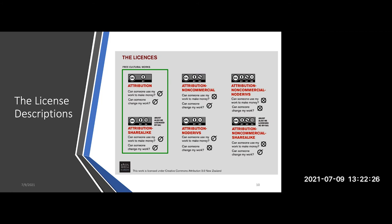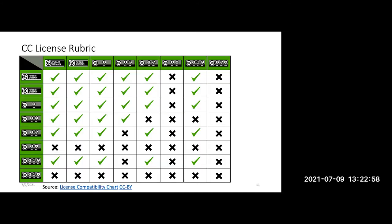Here we get a little sticky sometimes, because the purpose of Creative Commons is to allow you the greatest freedom in using those works. But open licenses — those in the green box — allow the greatest flexibility. If you try to mix several different resources with these licenses, you can run into a little trouble. So we're going to look at a little rubric next — this is the CC license rubric.